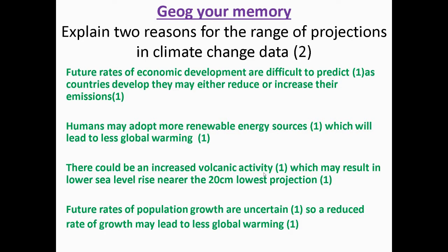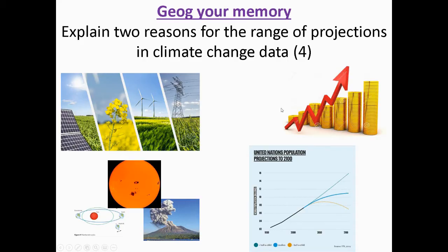So one reason why this might take place is because future rates of economic development are difficult to predict. As countries develop, they either reduce or increase their emissions. So you can see that here, we don't know how quickly our countries are going to develop. As there are some factors that could cause a country to go back in development, there are other factors that could cause it to progress even faster. The faster a country develops, it might mean that there's more emissions such as factories increased industrialisation.